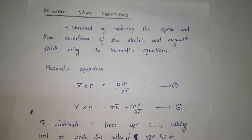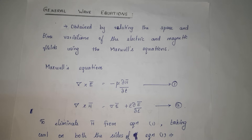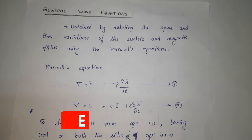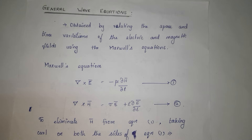Welcome friends. In this video we are going to learn about general wave equations. First, what is wave? Wave means transporting energy or information from source to destination. The wave consisting of electric and magnetic fields is called electromagnetic waves.